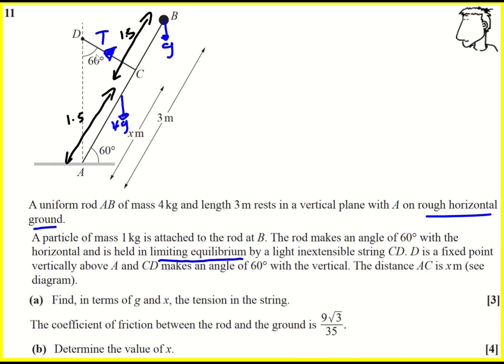Find in terms of G and X the tension in the string. So what I've not yet added to my diagram, which I'm going to do at this point, is the normal reaction force from the ground. So I will call that R. And at the moment, it's not in equilibrium, we are told that there was friction, the friction must act to the right to counteract the tension acting to the left. So it's going to be F_R.